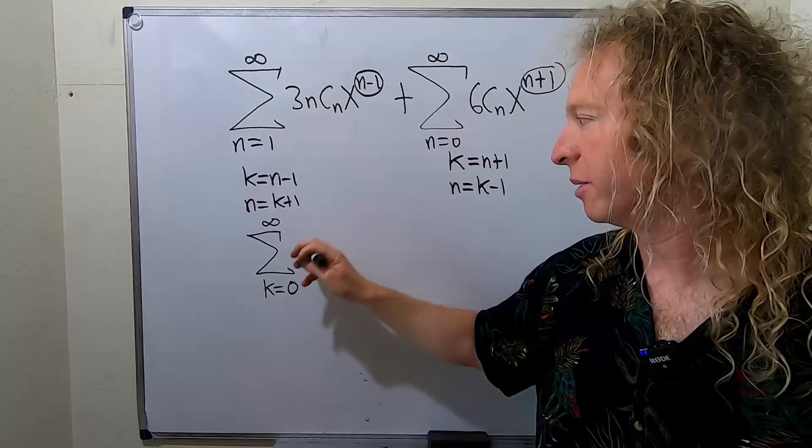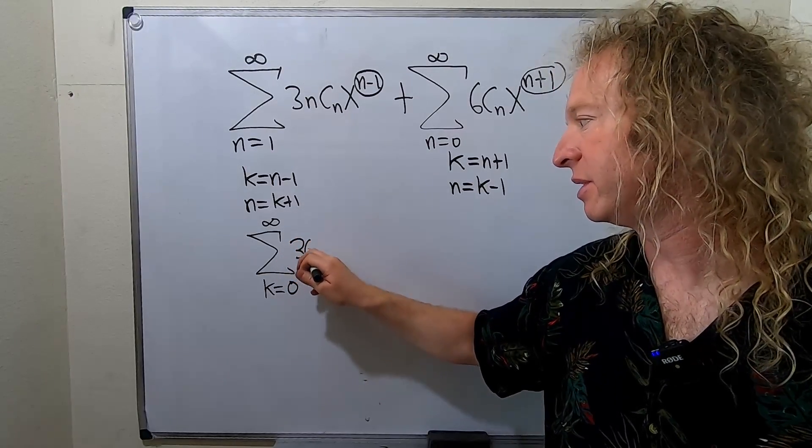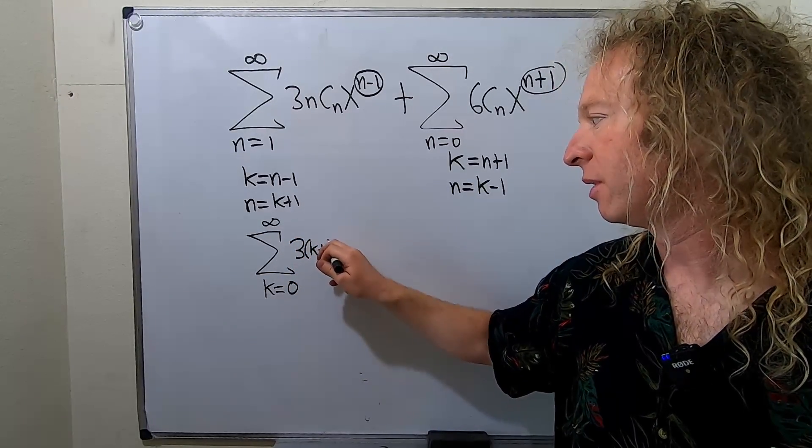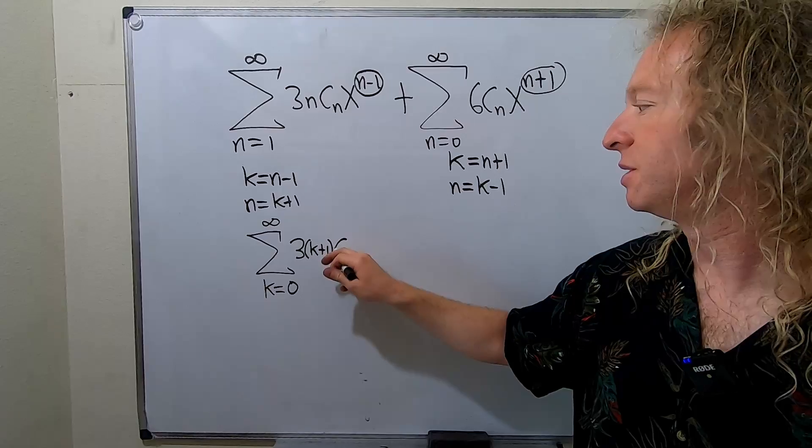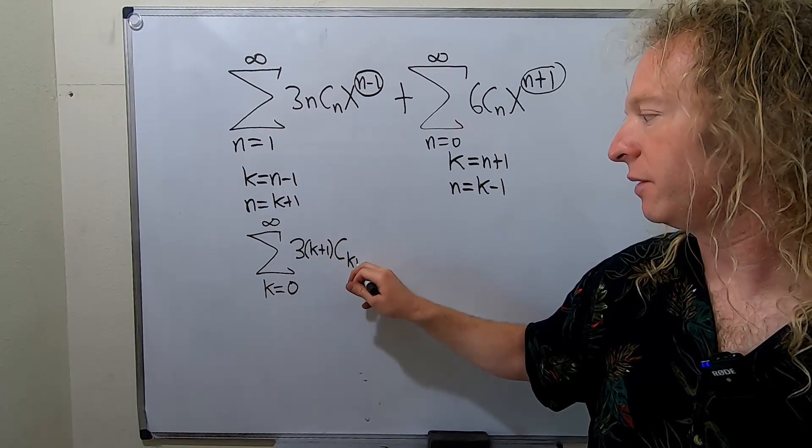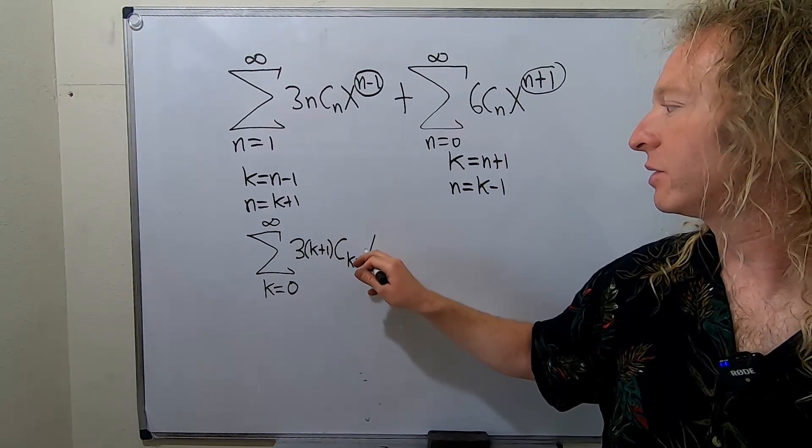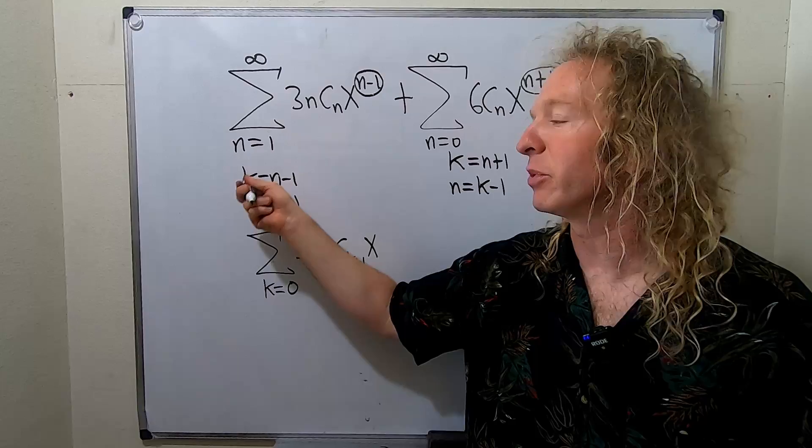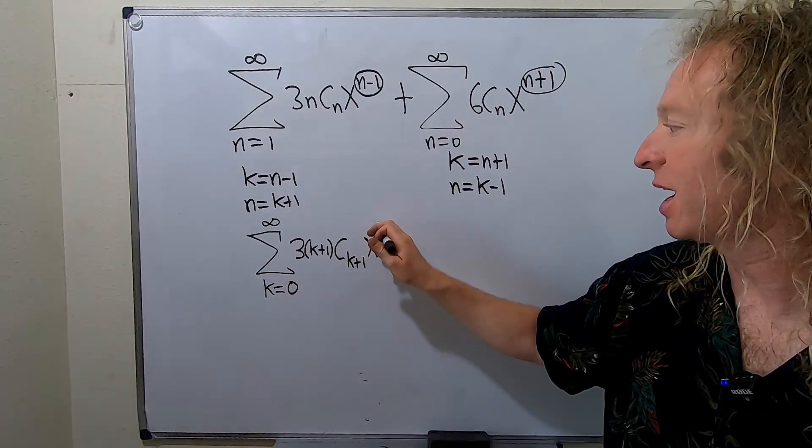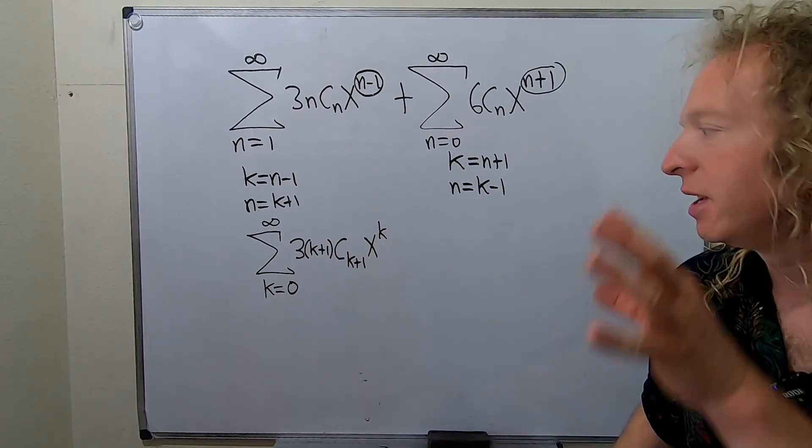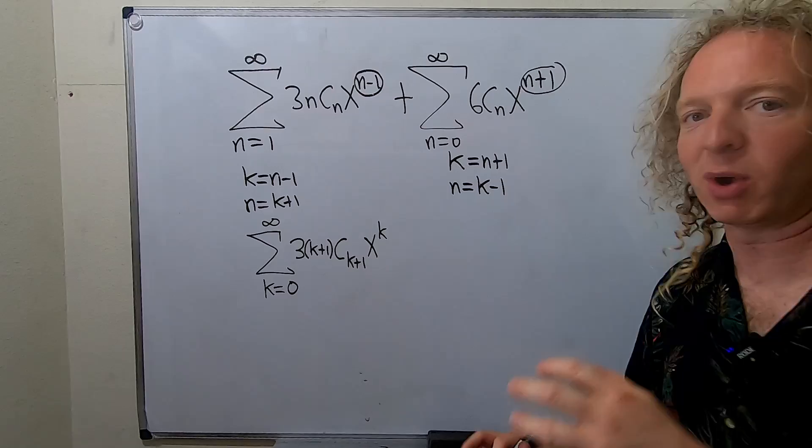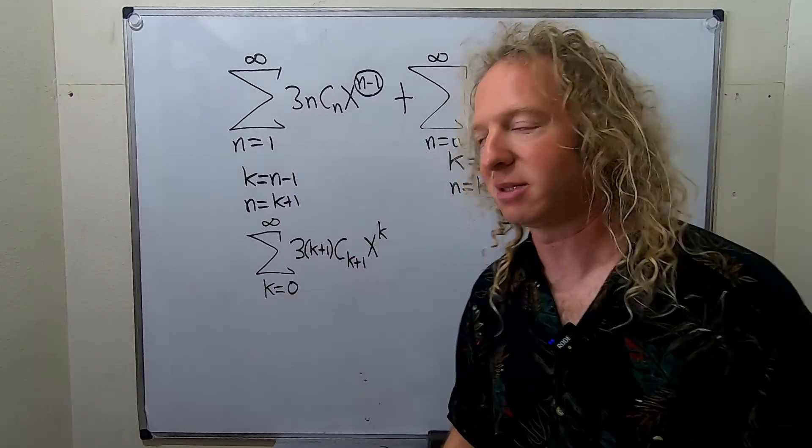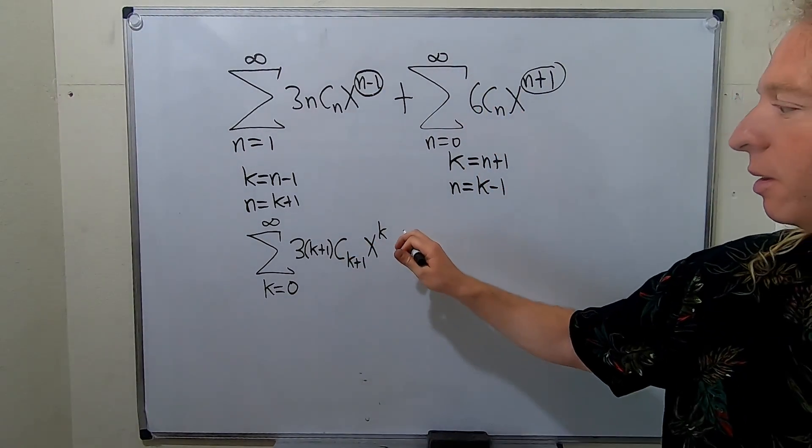We're still going to infinity. Now we're going to use the fact that n is k plus 1. So it's 3(k+1) C sub k plus 1 x to the k. That was the whole point. I always tell myself that is the whole point. The whole point is to make this a k. We want them all to be k's. Let's go to the next one.